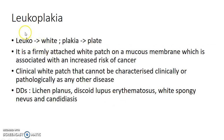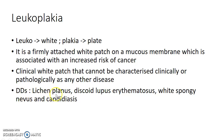Now let us see about leukoplakia. Leuco means white and plakia means plate. Leukoplakia is a firmly attached white patch on a mucous membrane which is associated with an increased risk of cancer. It is defined as a clinical white patch that cannot be characterized clinically or pathologically as any other disease. So leukoplakia is a diagnosis of exclusion. To diagnose leukoplakia, you need to rule out other differential diagnoses of a white patch like lichen planus, discoid lupus erythematosus, white spongy nevus, and candidiasis.